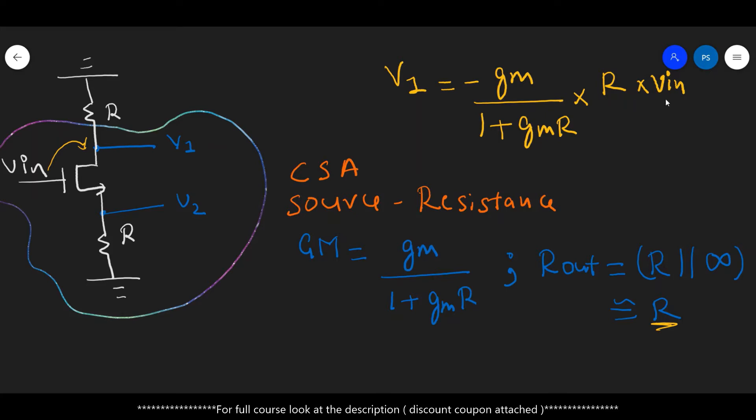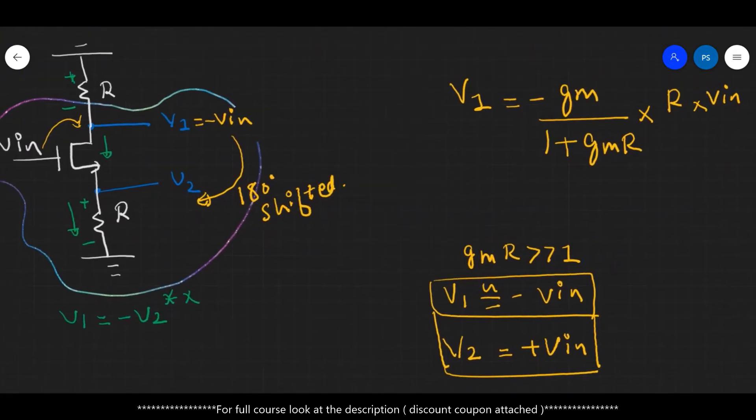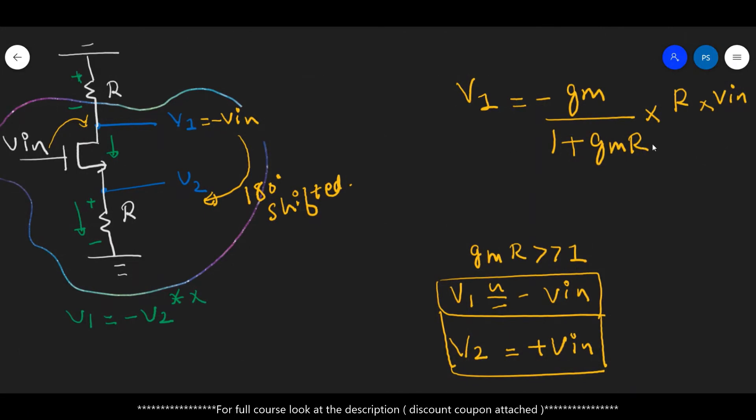Now let us further simplify it and see some interesting results. Now this is where we have arrived. Now if we assume that the gm into R, this factor, is very very large compared to one, if it is very high, then you can ignore this one.